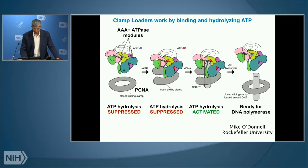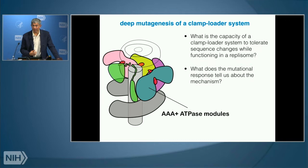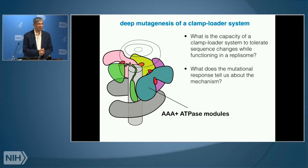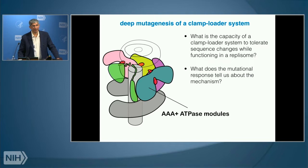The structures we've determined have told us many essential aspects of how these things are put together. Today I want to focus on two questions. First, the diversity of AAA-plus proteins — clamp loaders specifically — is enormous, both in sequence and structural details. Like all biologists who study molecular systems, we wonder how nature comes up with this diversity while maintaining an essential mechanism. One way to ask that is: what's the capacity of the clamp loader system to accept changes to its sequence while actually performing DNA replication?